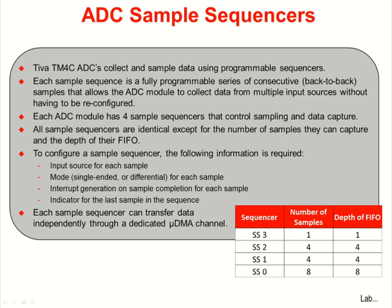The analog-to-digital converters collect and sample their data using programmable sequencers. Each sample sequence is a fully programmable series of consecutive samples that allows the ADC to collect data from multiple input sources without having to be reconfigured. Each one of the modules has four sample sequencers that control the sampling and data capture. They are identical except for the number of samples they can capture and the depth of the associated FIFO. To configure a sample sequence, the following information is required for each sample: the input source, whether the mode is single-ended or differential, whether or not to generate an interrupt, and whether this is the final sample in the sequence. Each sample sequencer can then transfer its data from the FIFO independently using a dedicated DMA channel.